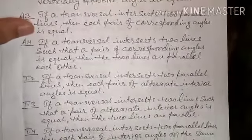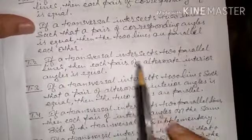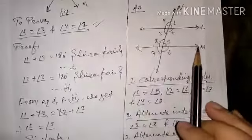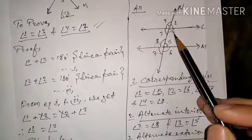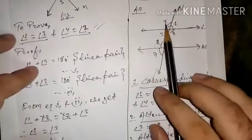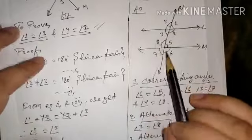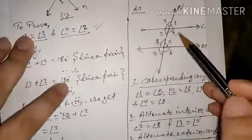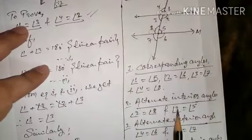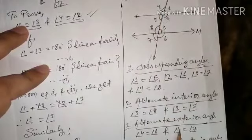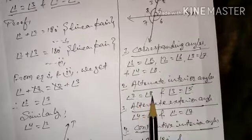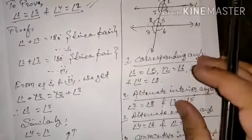Theorem 2: if a transversal intersects two parallel lines, then each pair of alternate interior angles is equal. First, let us understand exterior and interior angles. Angles 1, 4, 6, 7 are exterior angles; angles 2, 3, 5, 8 are interior angles. Alternate interior pairs are: angle 2 and 8, angle 3 and 5. Alternate exterior pairs: angle 4 and 6, angle 1 and 7. Consecutive interior pairs: angle 3 and 8, angle 2 and 5.